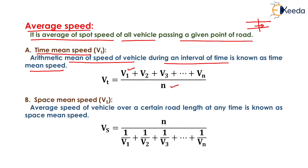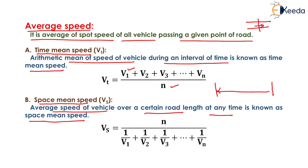Next is Space Mean Speed, denoted by Vs. The average speed of vehicles over a certain road length at any time is known as Space Mean Speed. It is determined by the formula: n (number of vehicles) divided by the sum of (1/V1 + 1/V2 + 1/V3 + ... + 1/Vn).